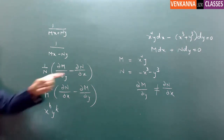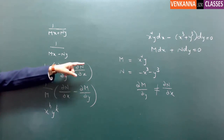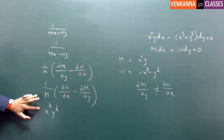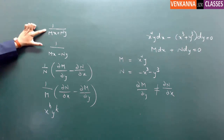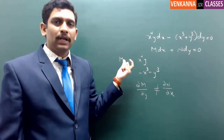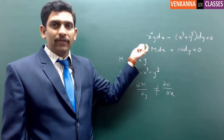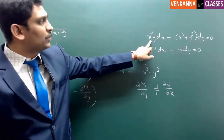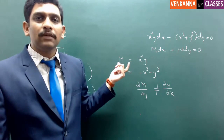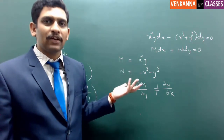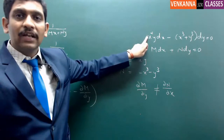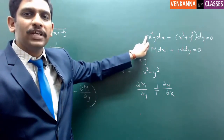Whenever the given equation is not exact, check among the five formulae which one is suitable. For the first formula, the criteria is that the equation must be homogeneous. Apart from the sign, consider the total power in each term. Here the total power is 3 in each term, so each term has equal degree. Therefore, it is a homogeneous differential equation.